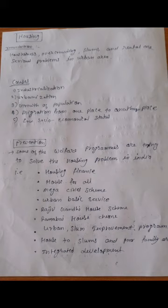Next are the causes of housing problems. These include industrialization, urbanization, growth of population, migration from one place to another, and low socioeconomic status. Industrialization is the process in which the urban area is converted to an industrialized area. Urbanization is the process in which rural area is converted to urban area.